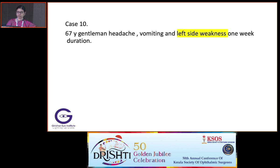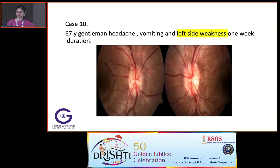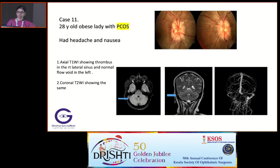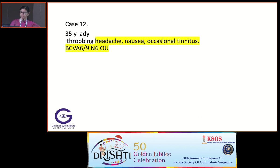A 67-year-old gentleman with headache, vomiting, left-sided weakness, one-week duration, and both-eye disc edema. MRI showed a mass lesion which was meningioma. A 28-year-old obese lady with PCOS and both-eye disc edema — MRI showed lateral sinus thrombosis and MRV was also taken. So for bilateral disc edema, we have to think of intracranial lesions, cerebral venous sinus thrombosis, or idiopathic intracranial hypertension.